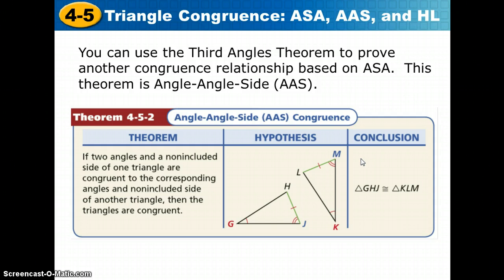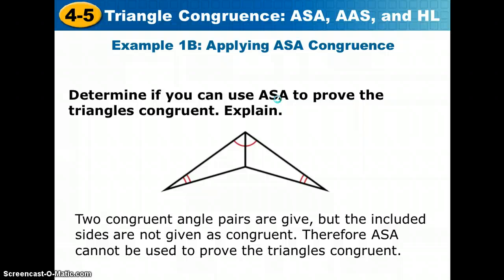But we do have another congruence theorem we can use. Because of the third angles theorem, I'm going to take you back to example 1b. Because of the third angles theorem, these two angles are congruent to these two, we could conclude that the third angle in each triangle are congruent. That would give us angle here and here, the shared side, and then these two angles are congruent by the third angles theorem.